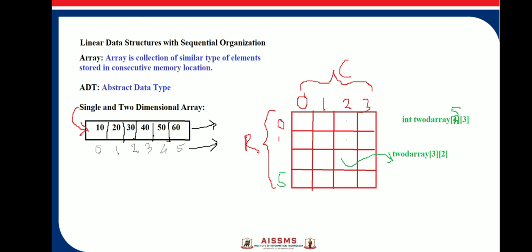Another type is the two-dimensional array, which consists of rows and columns.